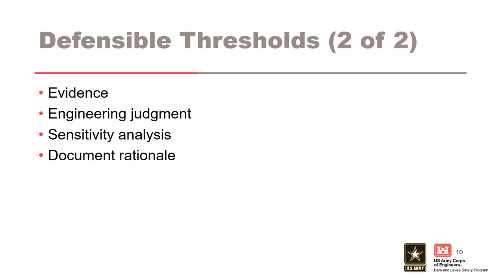A few more strategies for developing defensible perception thresholds include going with the strongest evidence. If you have more than one piece of evidence, go with the one you feel most comfortable defending. Use engineering judgment — that's always going to be required when doing this kind of flood hazard analysis. Perform sensitivity analysis; this is a key idea. If you want to see how something impacts your flood hazard curve, make sure to perform sensitivity analysis. And of course, always document your rationale — you should always explain in your report how you came to your conclusions.